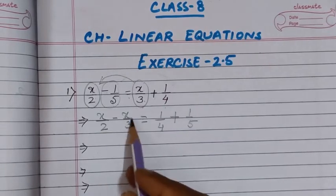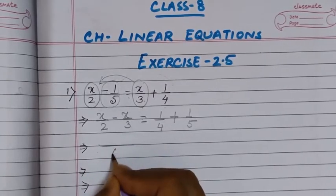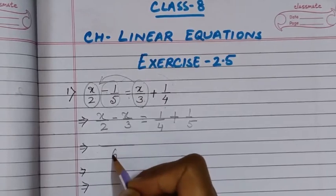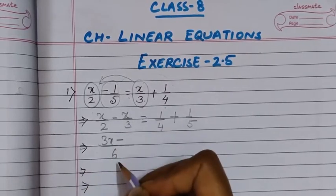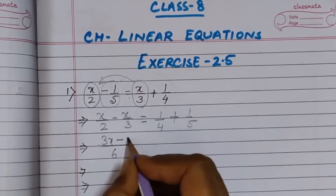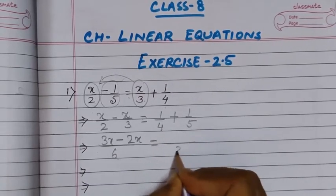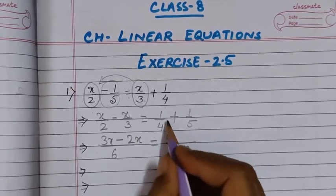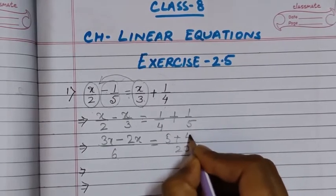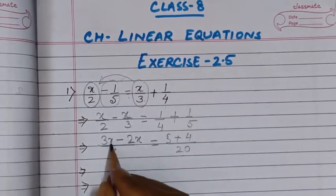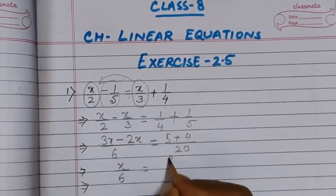We will take the LCM of 2 and 3. The LCM of 2 and 3 is 6. We will multiply the numerator with 3, so it will be 3x minus, and 2 into 3 is 6, so the numerator will become 2 into x, that is 2x. So 3x minus 2x will be x, giving us x by 6 on the left hand side.